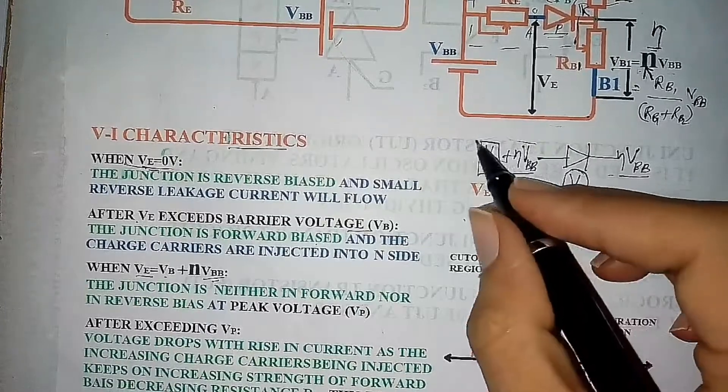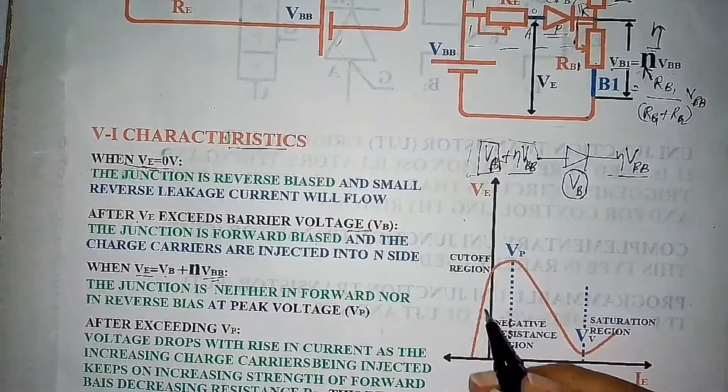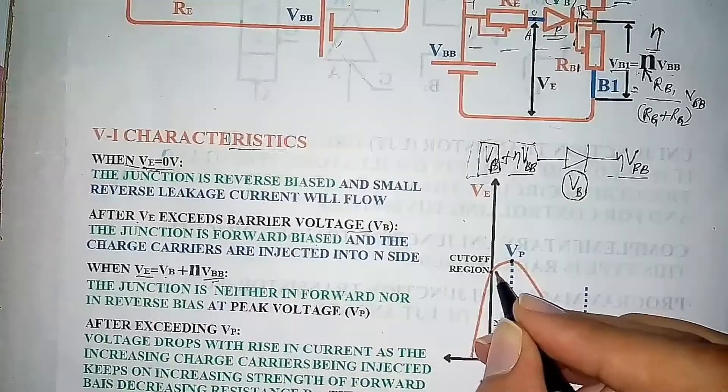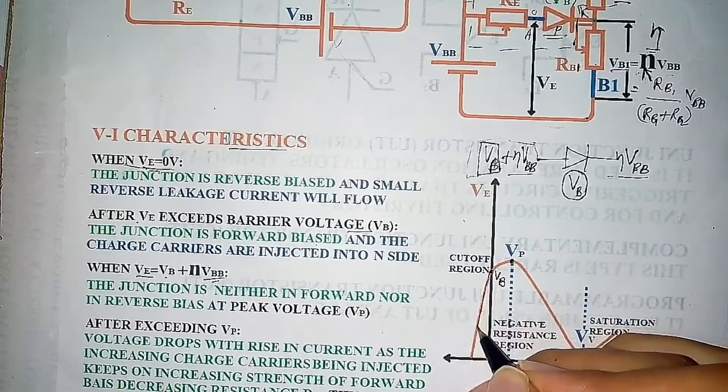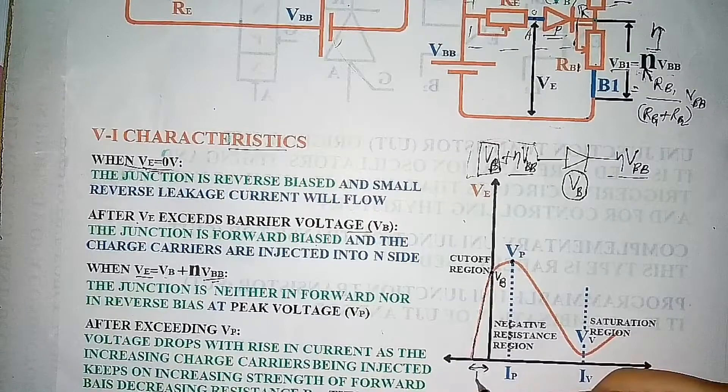And this value is represented in the VA characteristic as peak voltage Vp. This is the barrier voltage value. This curve indicates reverse current.